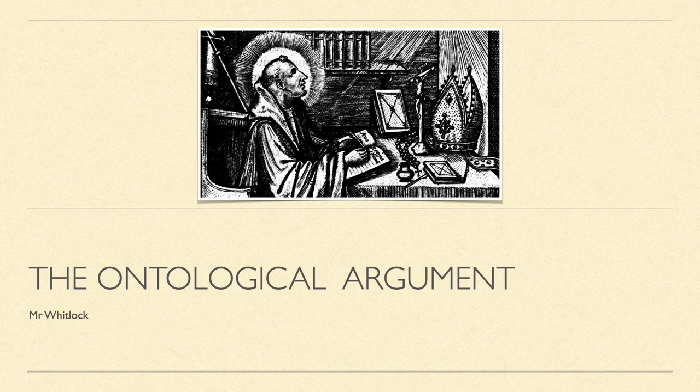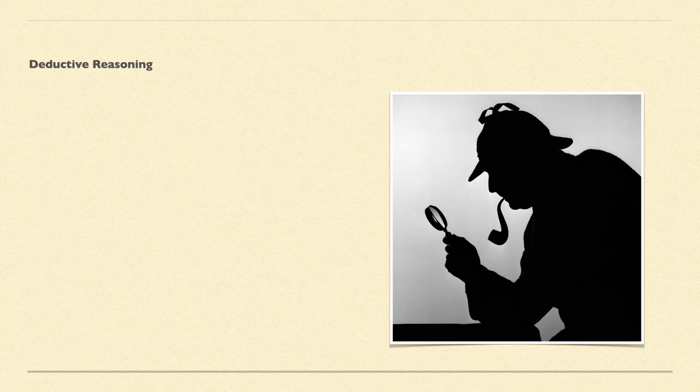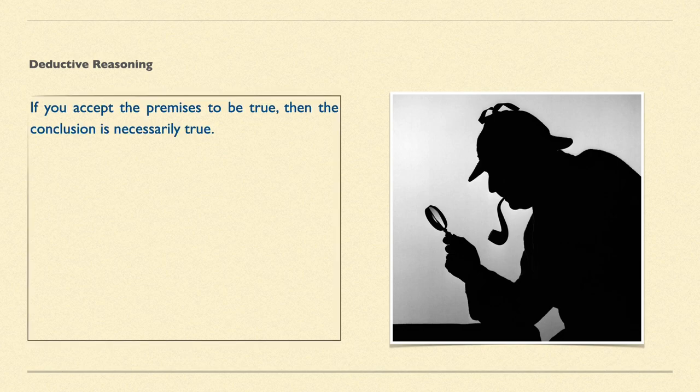The ontological argument. This argument, unlike the design argument that we looked at, uses deductive reasoning. That is, if you accept the premises of the proof to be true, then the conclusion is necessarily true. So let's take a look at one example.